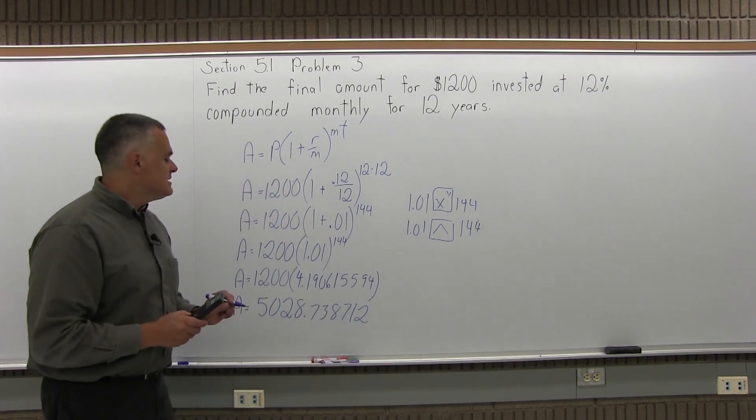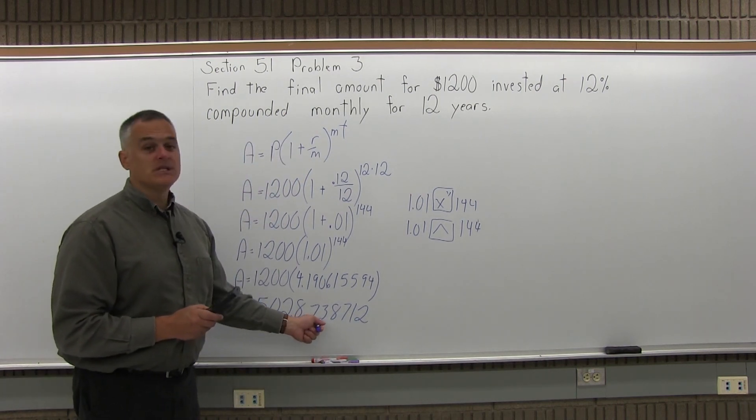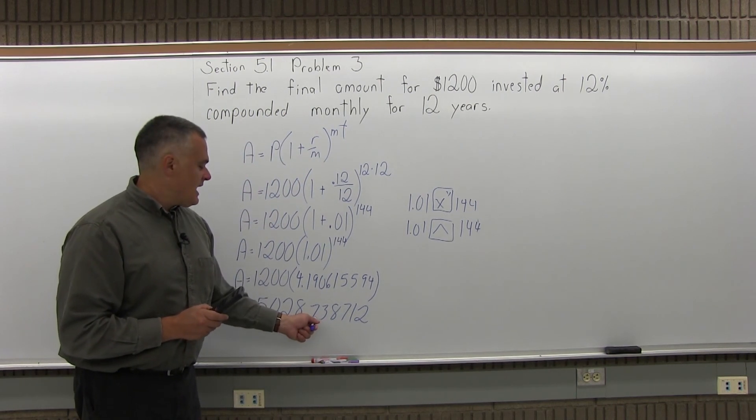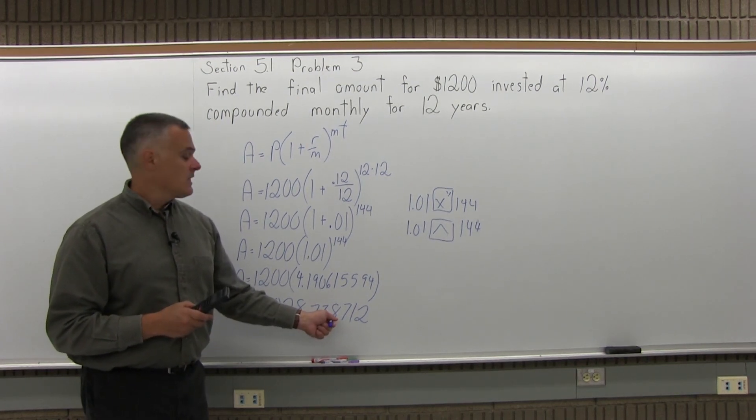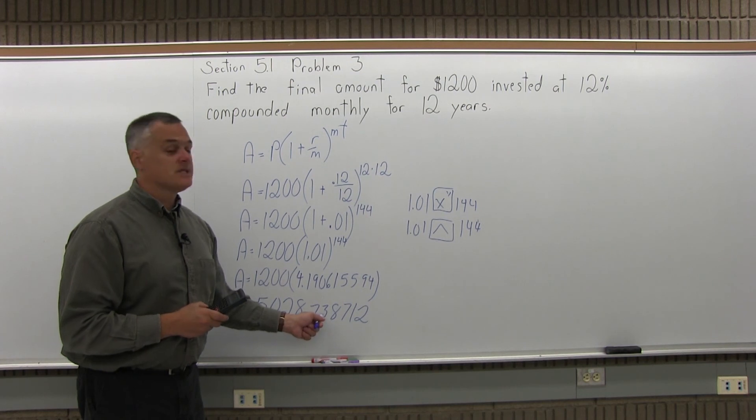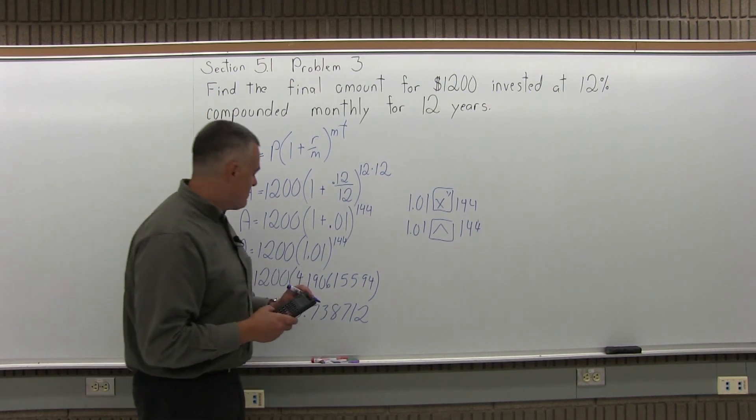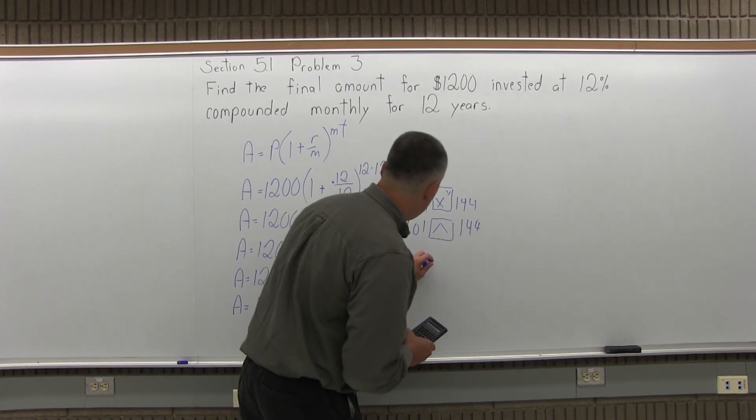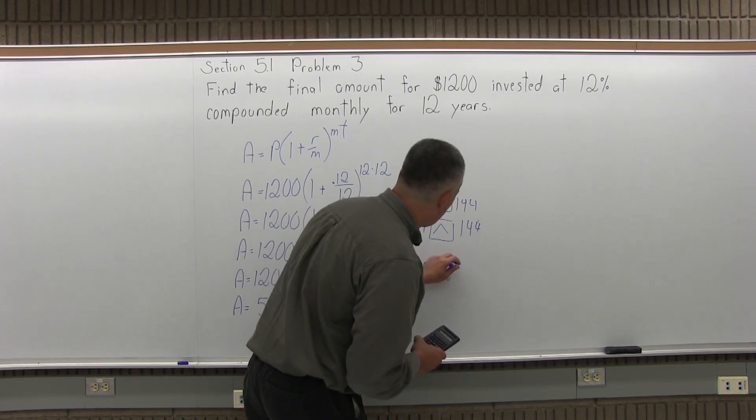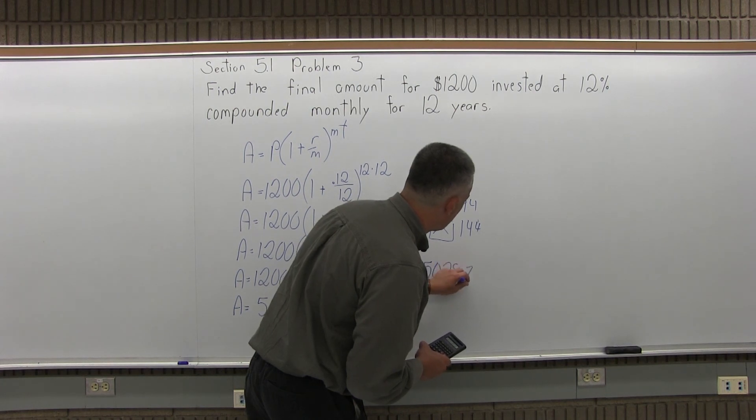Now, because this is money, I want to round to two places after the decimal point. I have 73 and then it's an 8 that's the third digit out. So that 8 is big enough to push this up to 74 cents. So my final answer will be $5028.74.